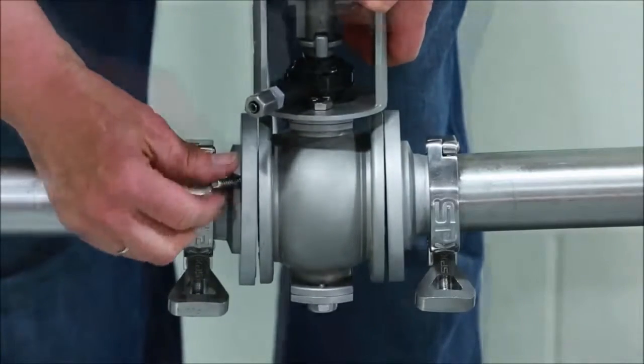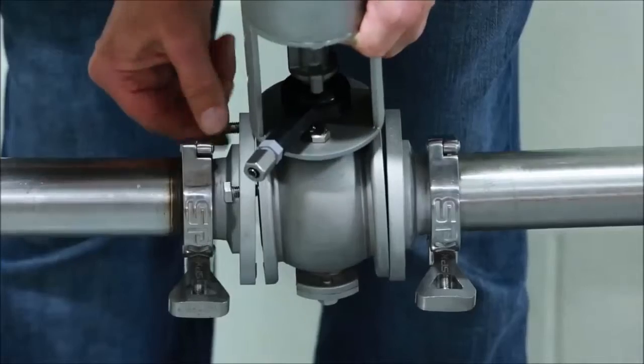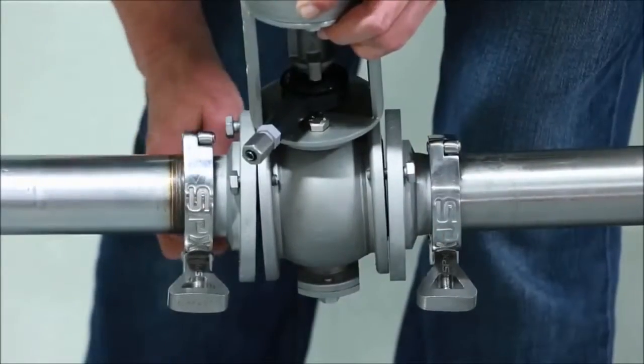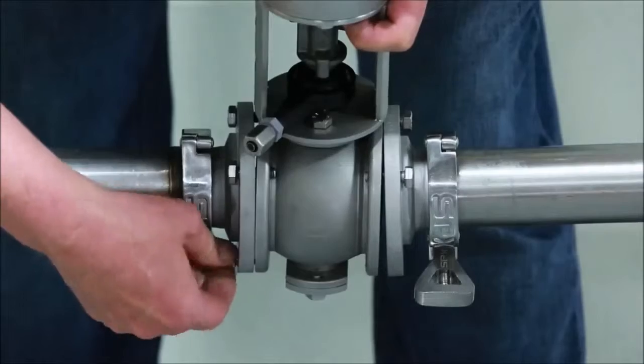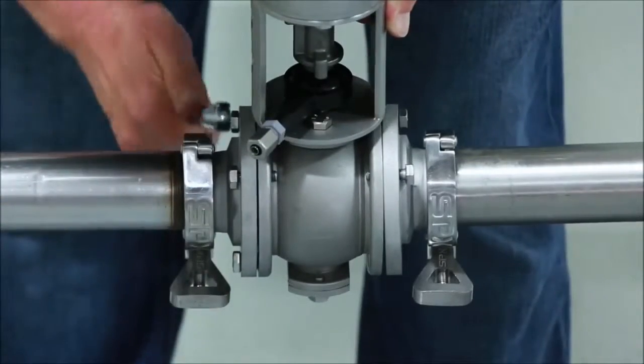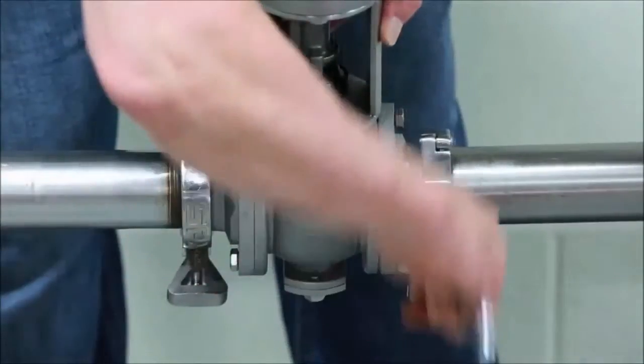Return to the installation location and gently position and support the valve between the connection cover flanges. Line up the holes and install the bolts using a 13mm wrench to tighten equally in a cross pattern.